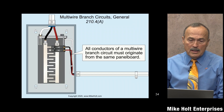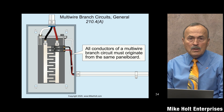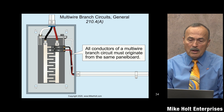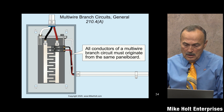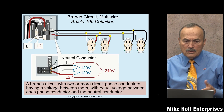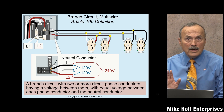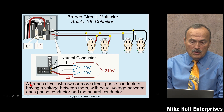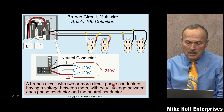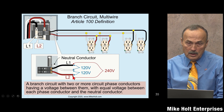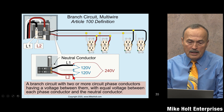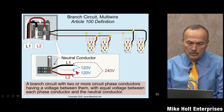NEC 210.4 deals with multi-wire branch circuits. The rule in 210.4A is that all circuits of a multi-wire branch circuit must originate from the same panel board. Here's a graphic of the definition of a multi-wire branch circuit for single phase: it is a branch circuit with two or more phase conductors having a voltage between them — line one and line two — with 120 volts from each line to neutral.